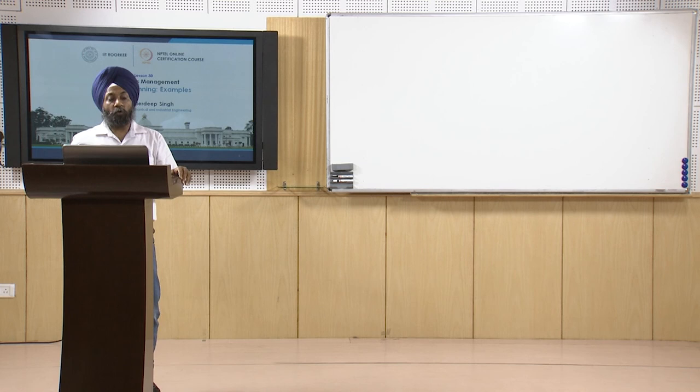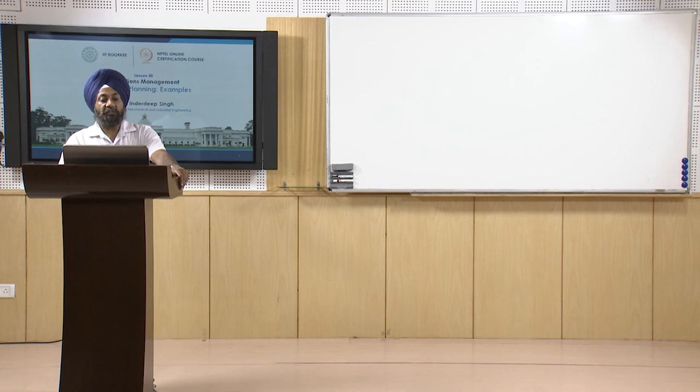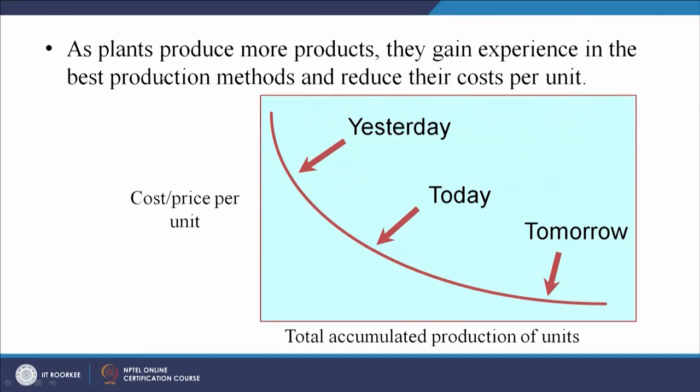From the graph we can see that as the plant produces more products, they gain experience in the best production methods and reduce their costs per unit. As and when you produce more units, you learn more about the process, about optimization, and about the skills required to make that product.